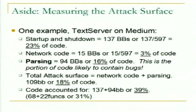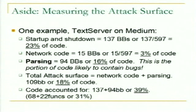The text server on the median setting — just starting it and stopping it — hit 137 basic blocks out of 597, so that's 25% of the code, just from starting and stopping the application. You can see how filtering is critical. Just grabbing a TCP connection was 15 basic blocks. The TCP fuzz parsing is the only part that could contain vulnerabilities — the only bit you can test via the attack surface. The total attack surface is only about 18%, and a large amount of code is just unaccounted for — stuff that gets linked in that you'll just never hit.